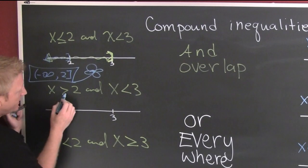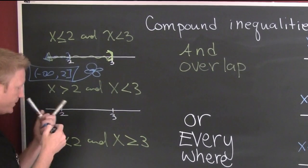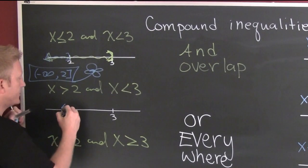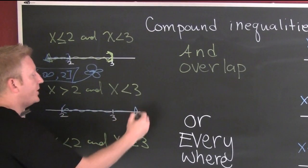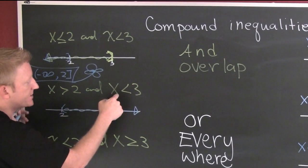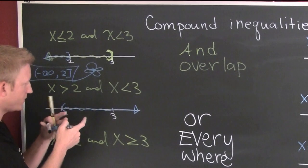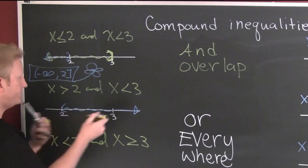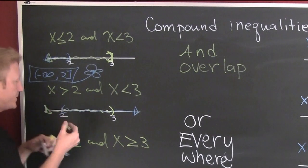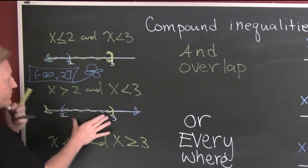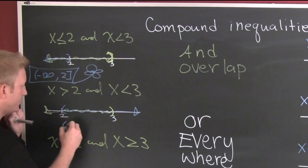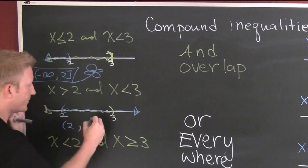Next one: x is greater than two. I'm gonna shade to the right, and it's open. As long as x is on the left, it goes the way the arrow goes. Now where do those overlap? They overlap from two to three.